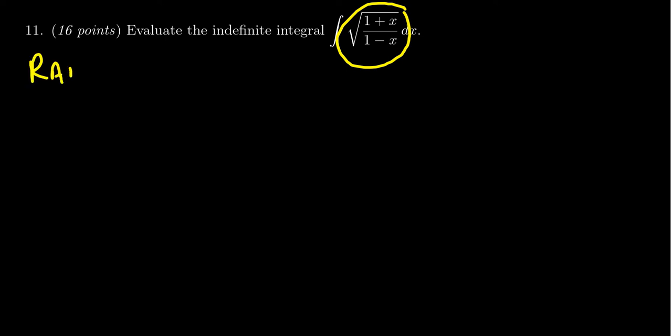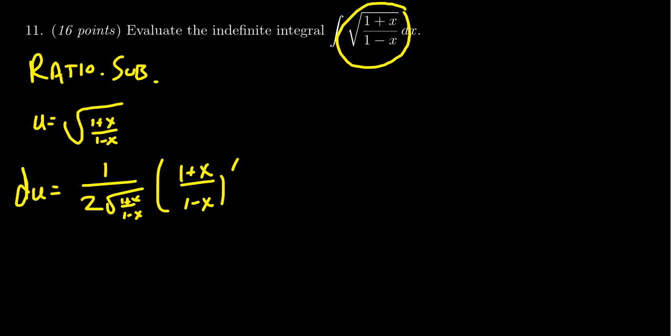One possible attempt is a rationalizing substitution, for which case you would set your u equal to the square root of (1+x)/(1-x). To do so, though, you'd have to also take the derivative, which the derivative of a square root is going to be 1 over 2 times that square root, but then you also have to take the inner derivative using the quotient rule. While you can use the substitution to remove this square root in terms of u, however messy this turns out might be difficult to make the rationalizing substitution work. So while there is some promise here, it doesn't seem like a really great hope. I'm afraid that the derivative is going to complicate it dramatically, so I'm going to actually plan a different strategy here.